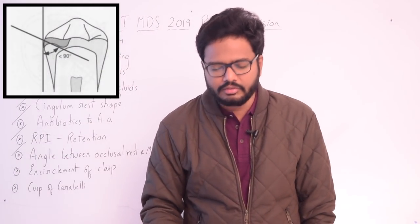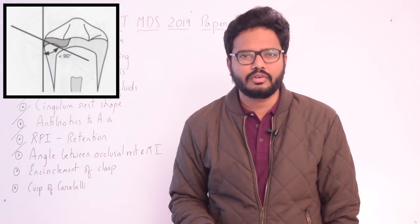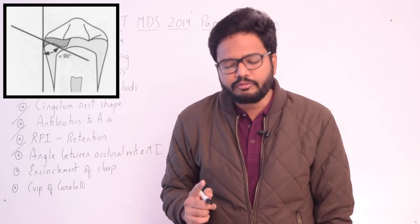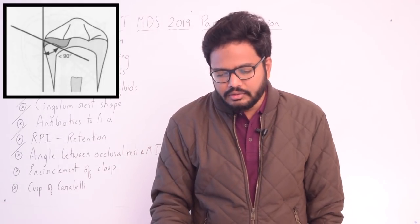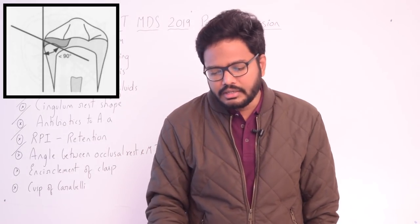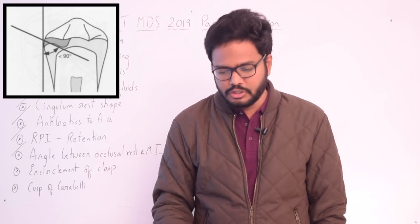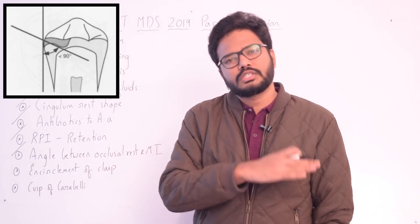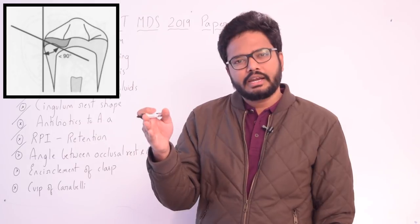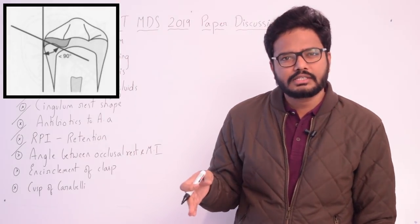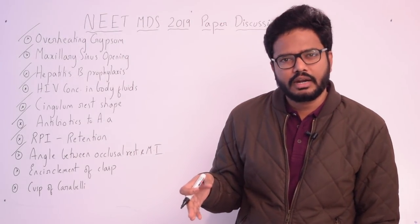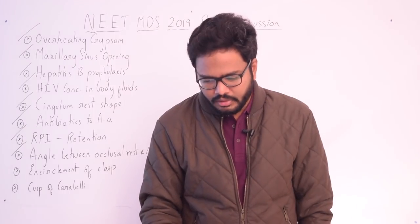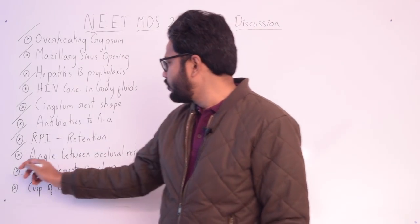Regarding the angle between the occlusal rest and the minor connector: it has to be less than 90 degrees, as you can see in the image. The angle formed by the occlusal rest and the vertical minor connector from which it originates should be less than 90 degrees, so that masticatory forces will be directed along the long axis of the tooth.